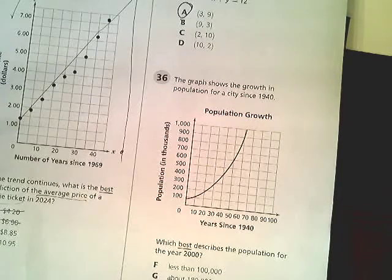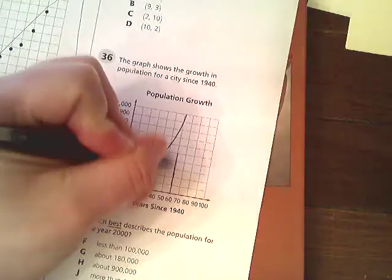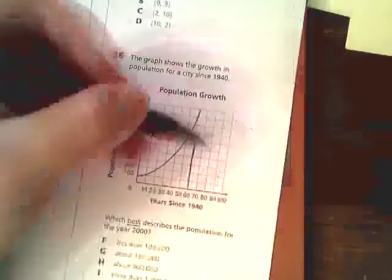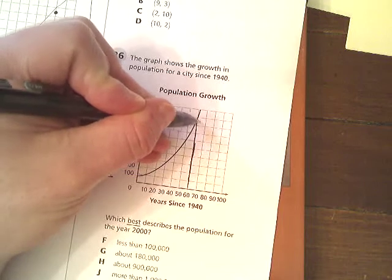But from 1940 to 2000, you just subtract 2000 minus 1940 and find that it's 60 years. So I'm going to look for 60 years right in here. Now what I want to know is where it connects, and it connects right here.